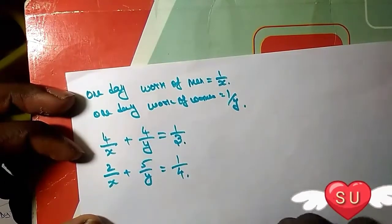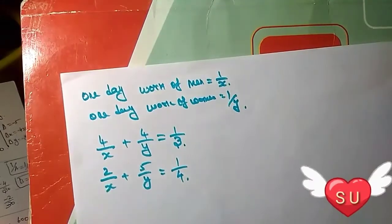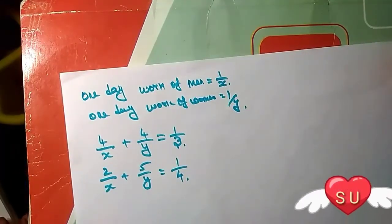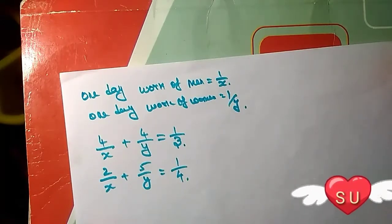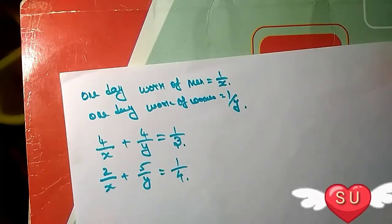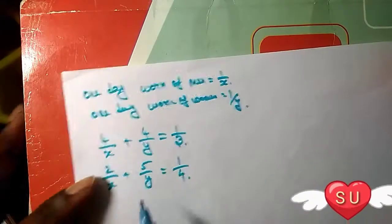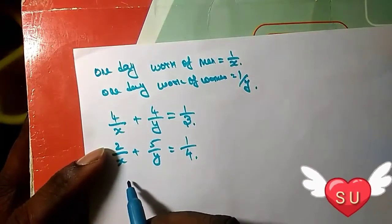So one by four. Next, we need to find the time taken by one man alone and one woman alone to finish the same work by using matrix inverse method. So in matrix inverse method, we have two equations.